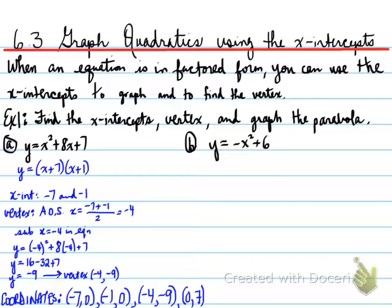So part b, we have the equation y equals negative x squared plus 6x minus 9, and we find the values. So y equals negative, common factor out the negative. Then we factor the expression, and that gives us y equals negative x minus 3 all squared.